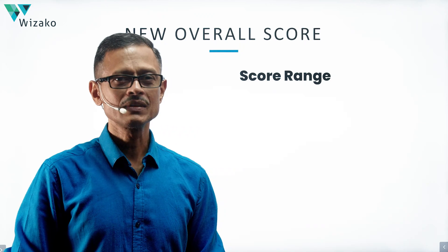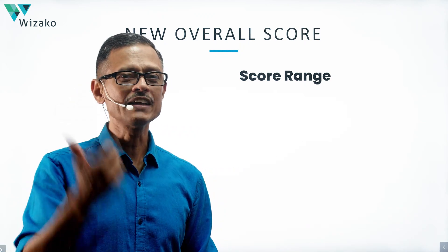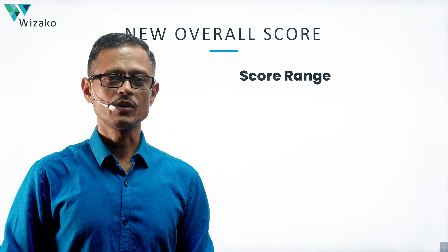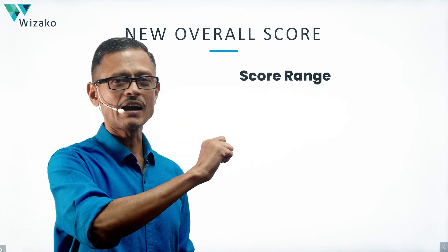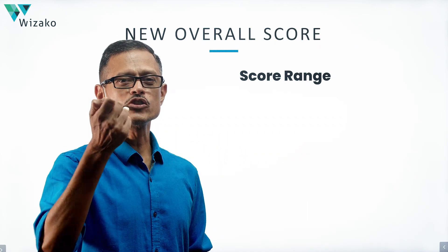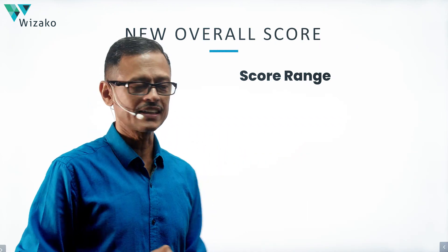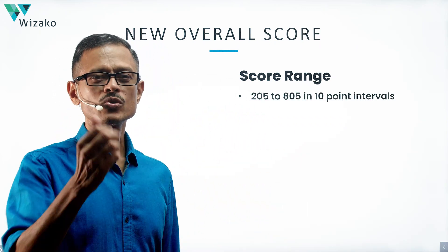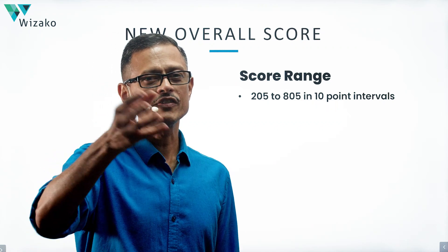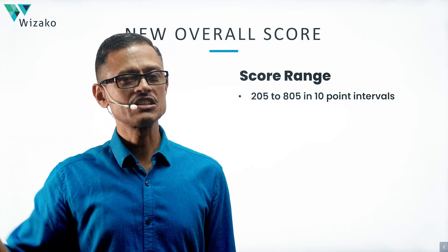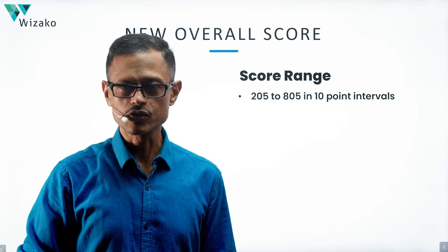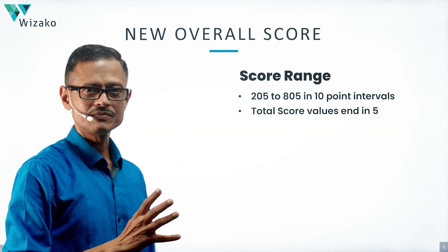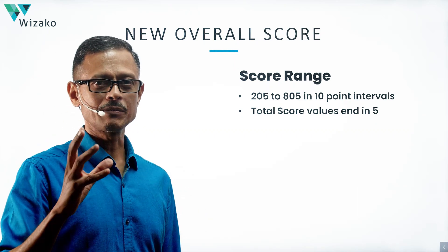To make that distinction, they've added five points to every possible score. So in the old GMAT the range was 200 to 800; now it is 205 to 805. Scores will be like 745, 755, 765, and so on — all total scores end in five. This is something important to keep in mind.